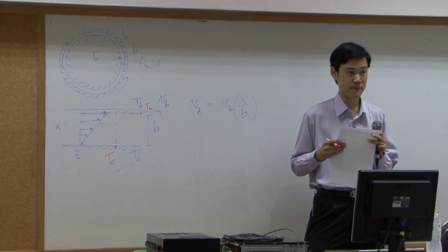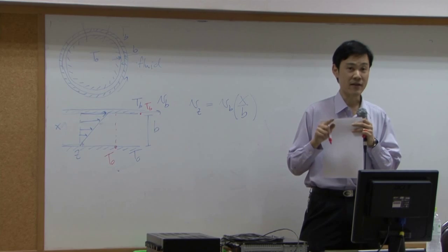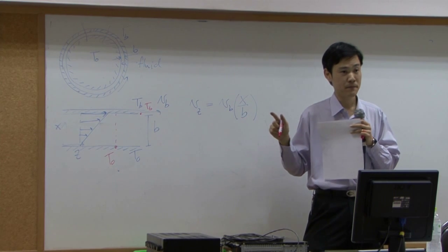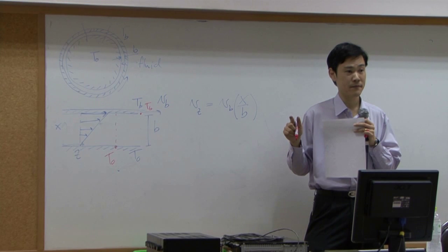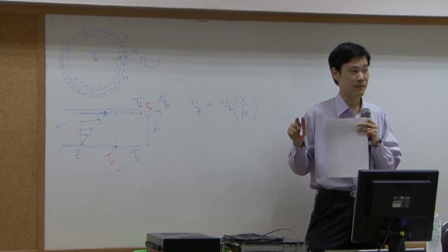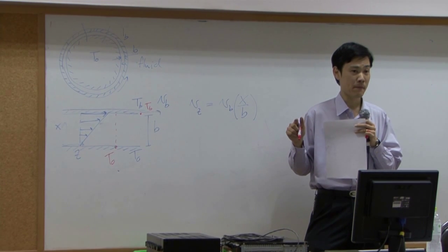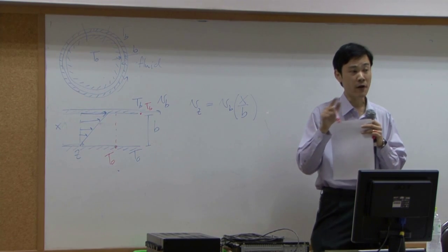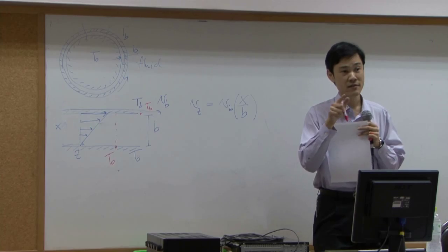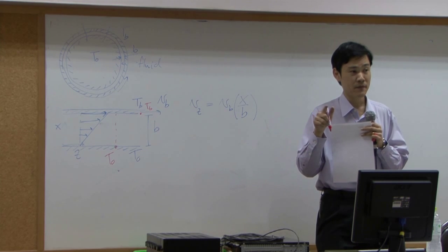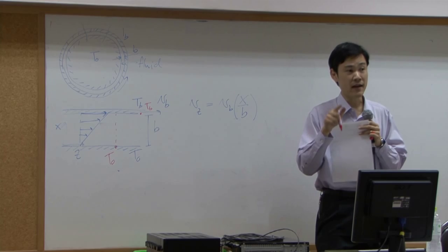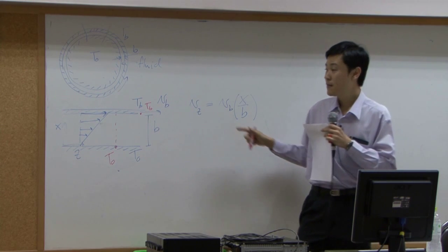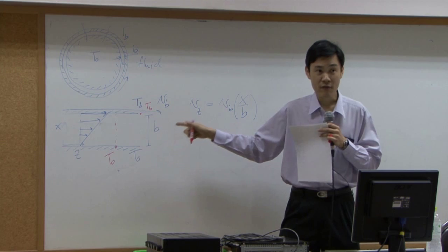If there is only conduction, if the temperature is linear. If you have conduction only, then Fourier law is applied. Fourier law is Q equal to minus K del T. If you integrate that, you get linear equation. Just like what we did earlier. But right now we have conduction and convection.